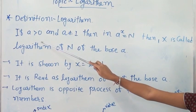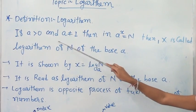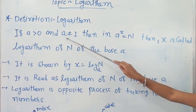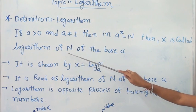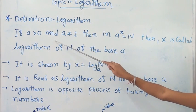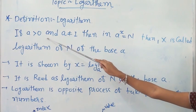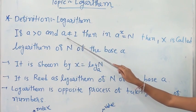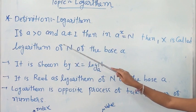We have two conditions: a greater than 0, and a is not equal to 1. That means the value of a logarithm is defined only for positive numbers and a is not equal to 1.